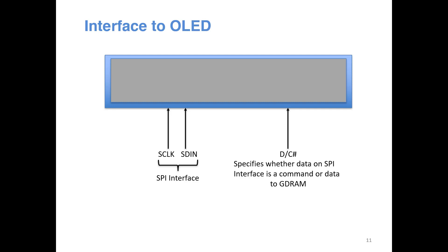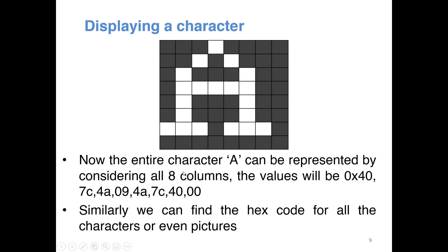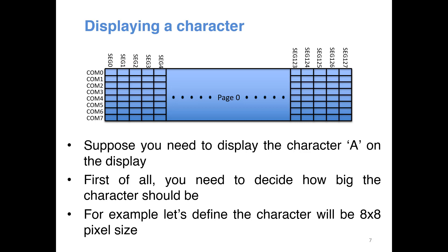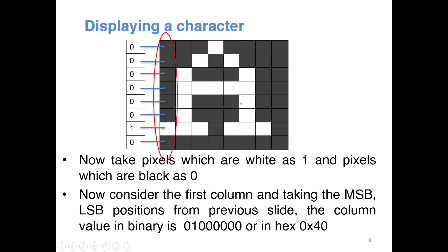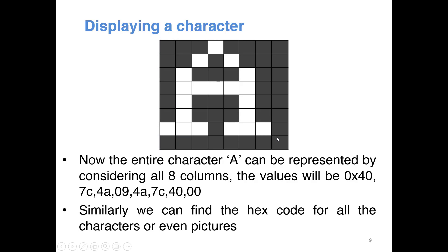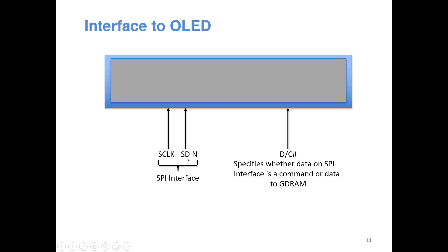When you interface Zinc with the OLED, the main interface is an SPI interface, and you send data to the GDDRAM as well as commands to the OLED controller through this SPI interface. The character bitmap information is sent as so-called data. In addition, you also send commands — for example, telling the display controller on which page a character should be displayed or from which column it should start.